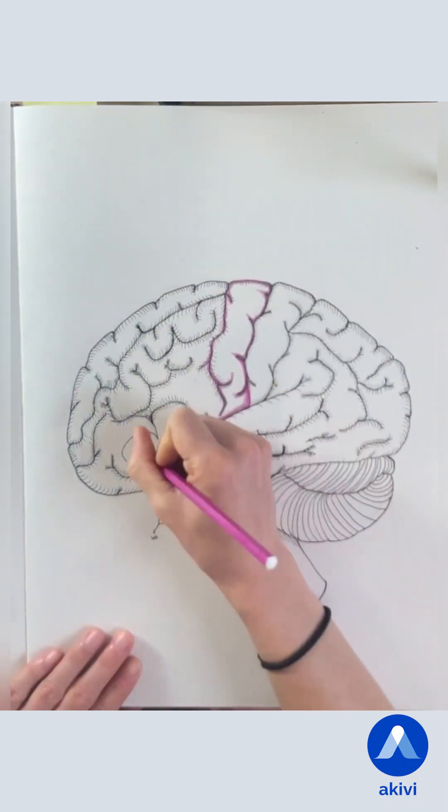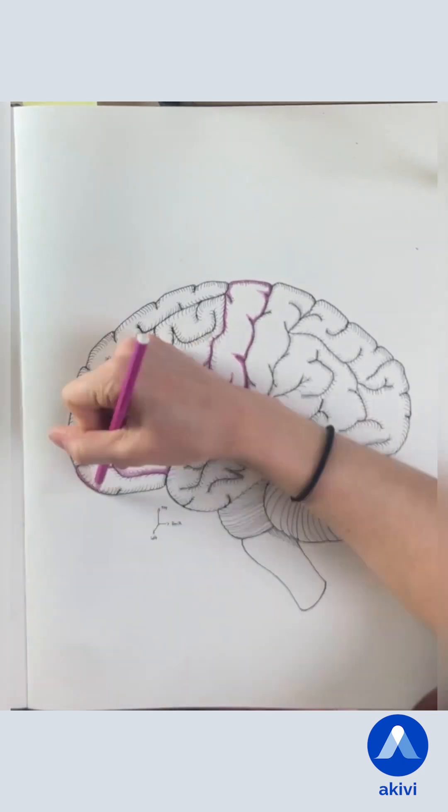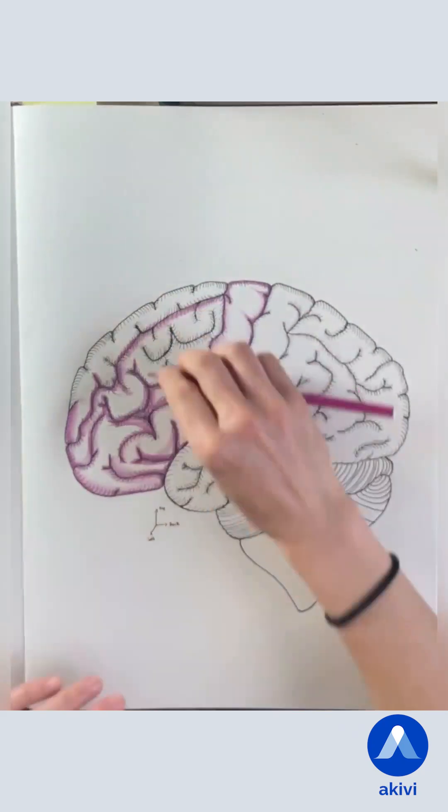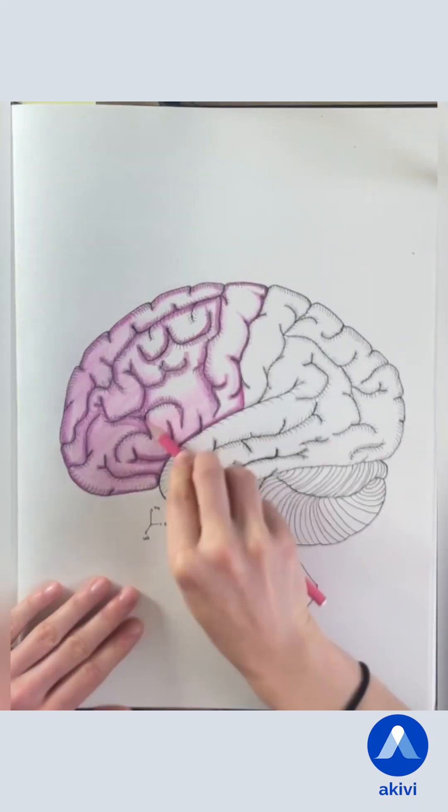The frontal lobe is responsible for motor functions, as well as decision-making and inhibition, which is why when lesions occur in this area, people can behave in a disinhibited or frontal manner.